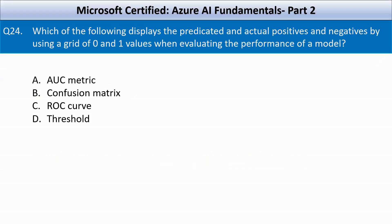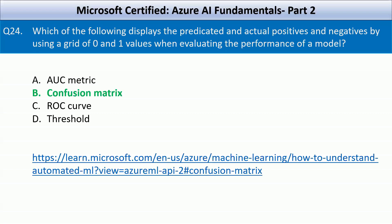Which of the following displays the predicted and actual positives and negatives using a grid of 0 and 1 values when evaluating model performance? Options are AUC metric, confusion matrix, ROC curve, or threshold. A confusion matrix is a table that displays predicted and actual positives and negatives when evaluating a model's performance. It helps analyze classification accuracy, precision, recall, and F1 score.